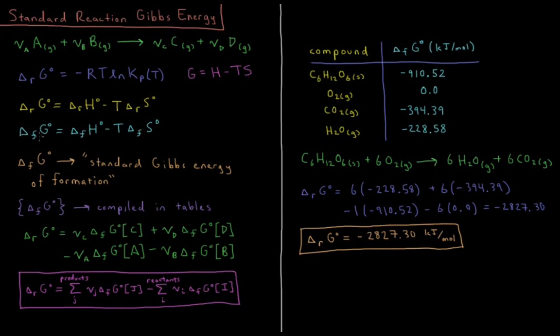We can look at things like the standard Gibbs energy of formation, this ΔfG°, which is the Gibbs energy that we get from forming a given chemical species from its elements in their standard state. So this is equal to the standard enthalpy of formation minus the temperature times the standard entropy of formation.